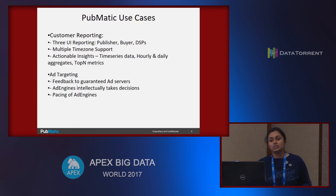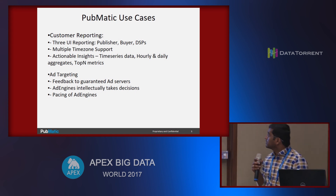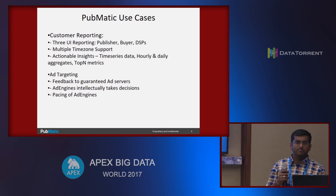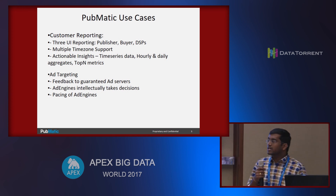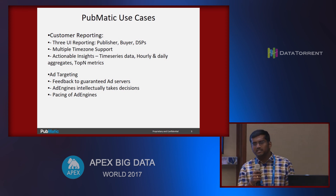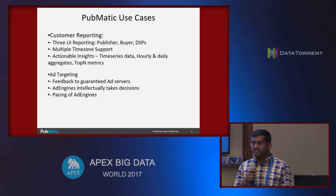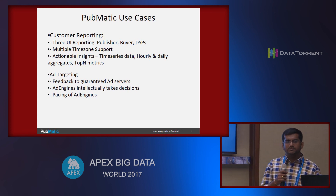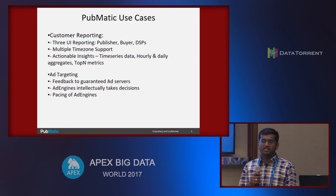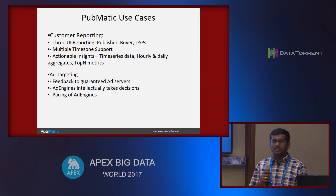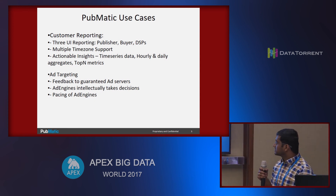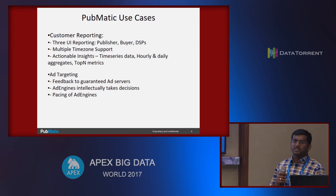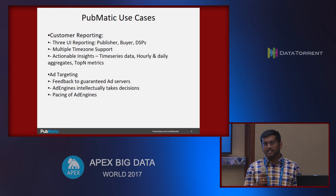Moving to the streaming use cases of PubMatic, we have two: customer reporting and ad targeting. We have publishers running web portals who want to show ads — we call them publishers — and ad suppliers called buyers or DSPs. We show reporting for three different stakeholders: buyers, DSPs, and publishers. Since ad serving is done in a geographically distributed manner, the time zone for each stakeholder is different, so we maintain time zone-specific timestamps for each publisher's real-time reports.